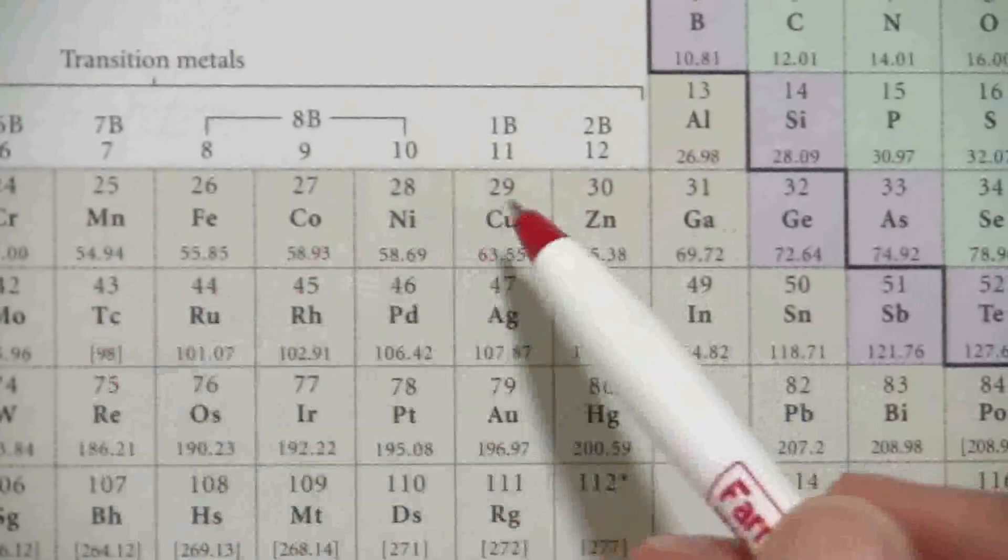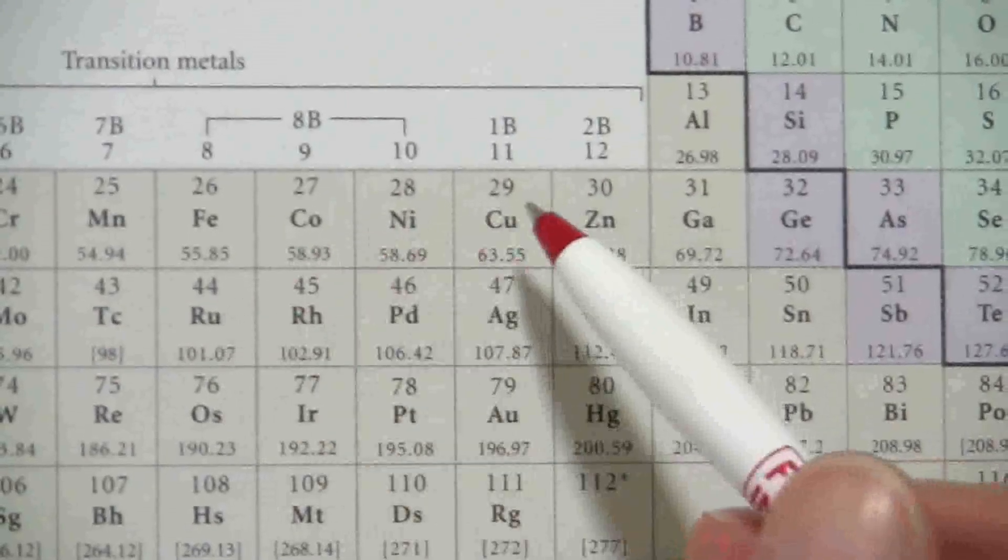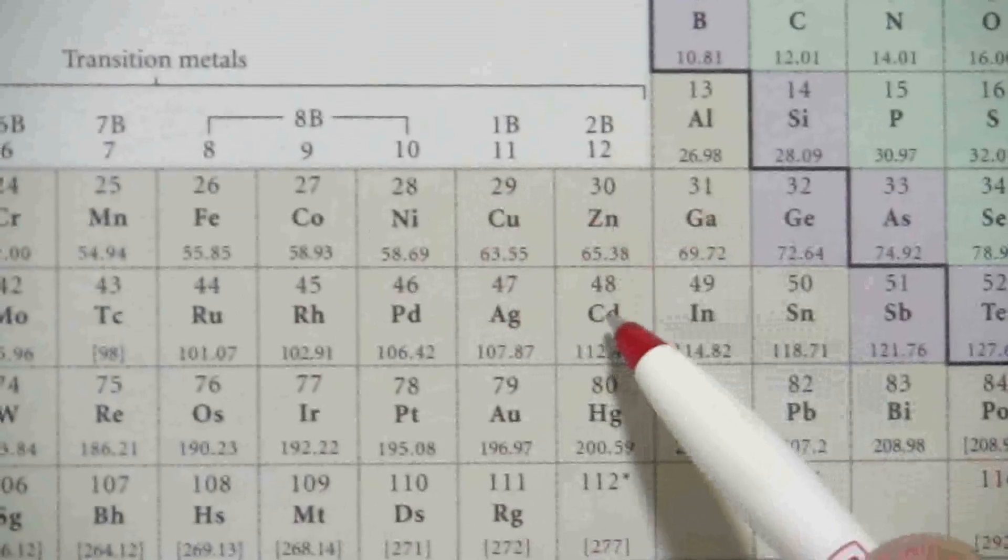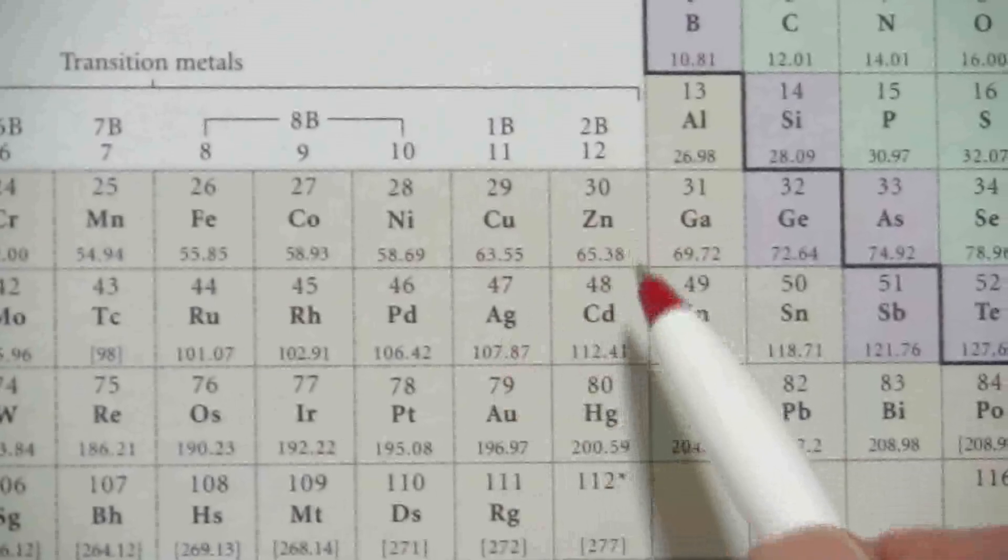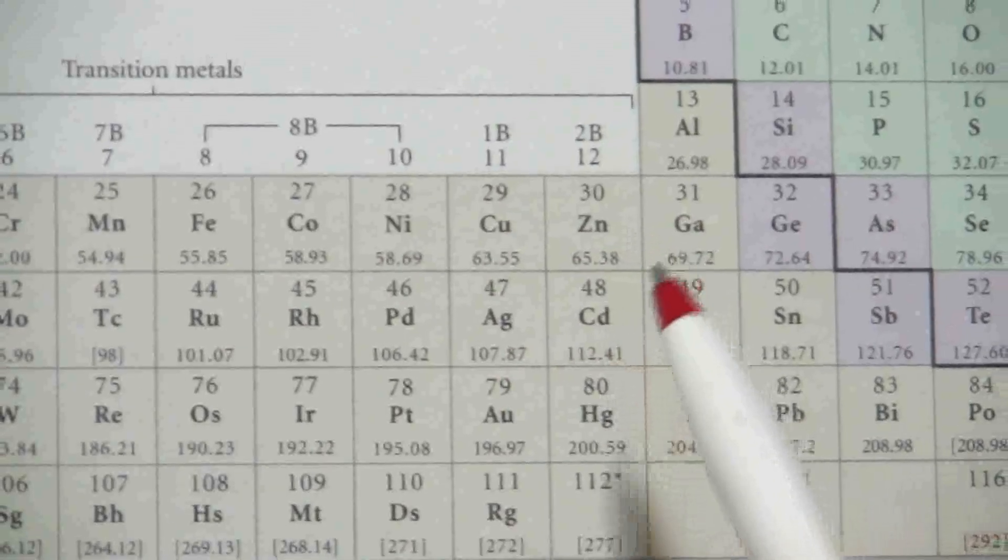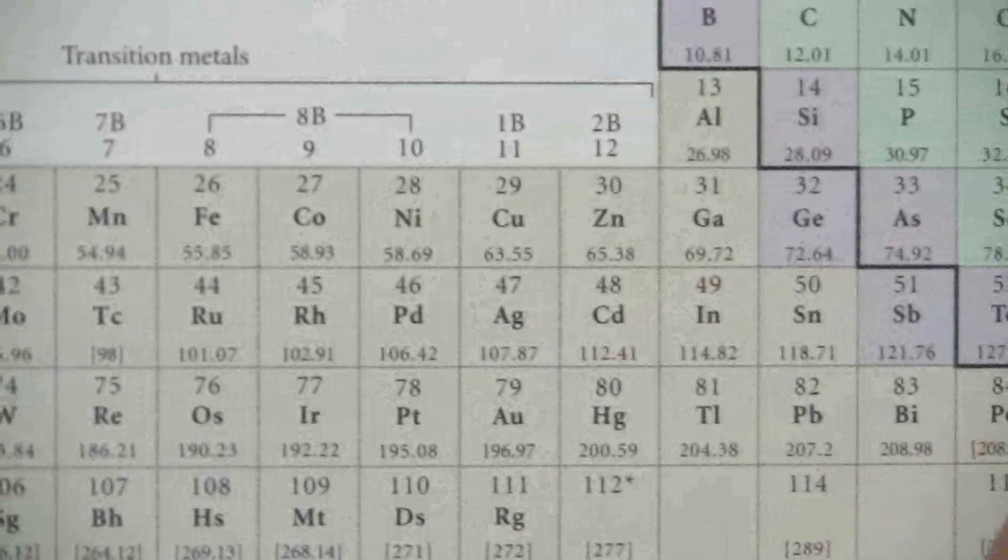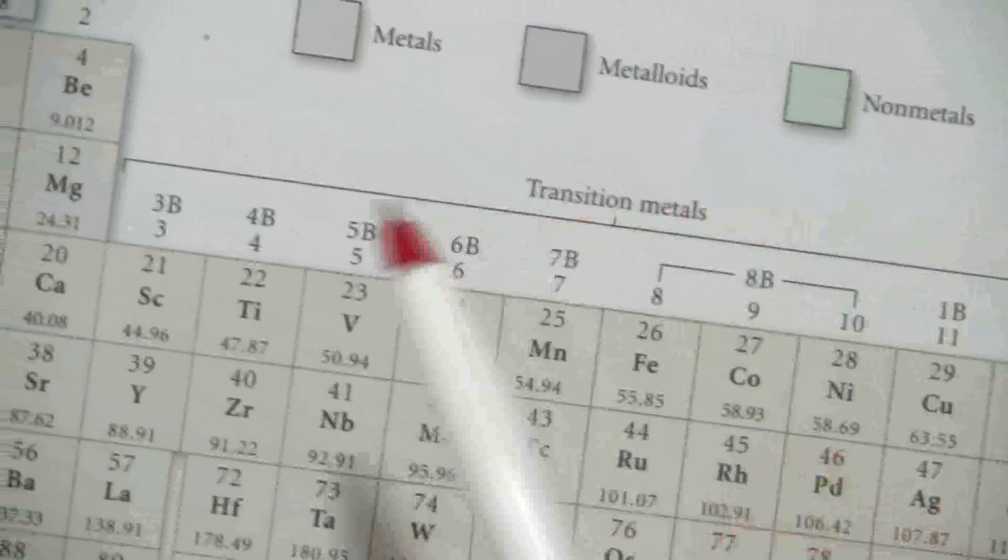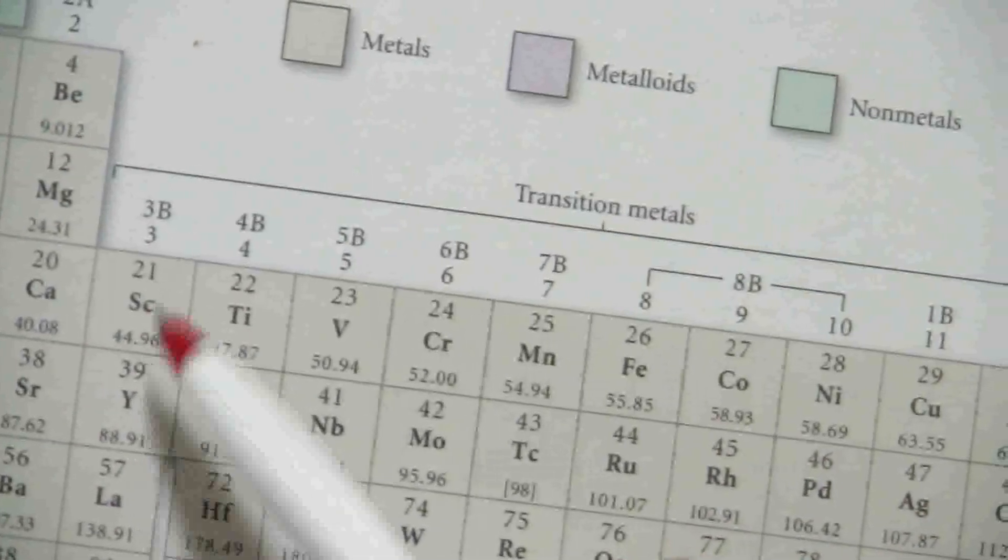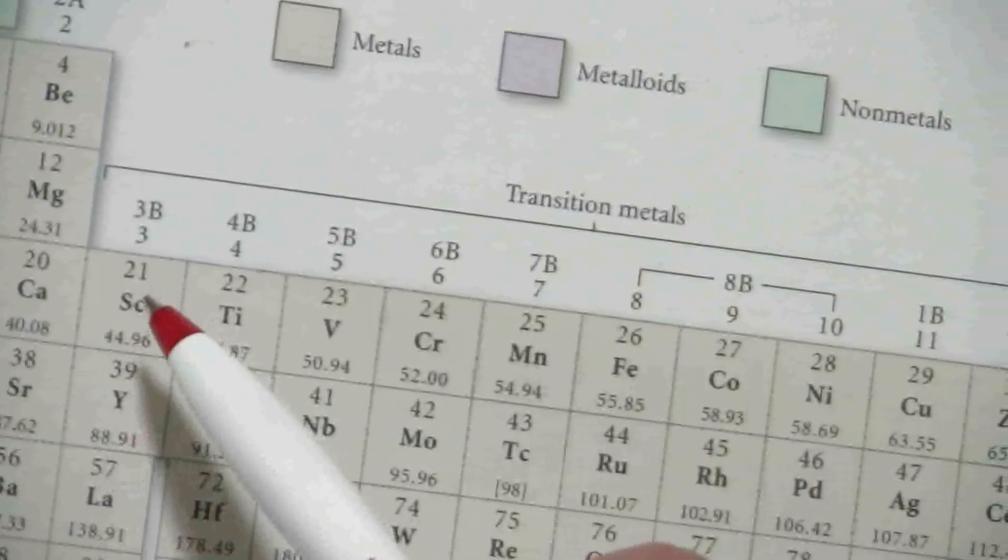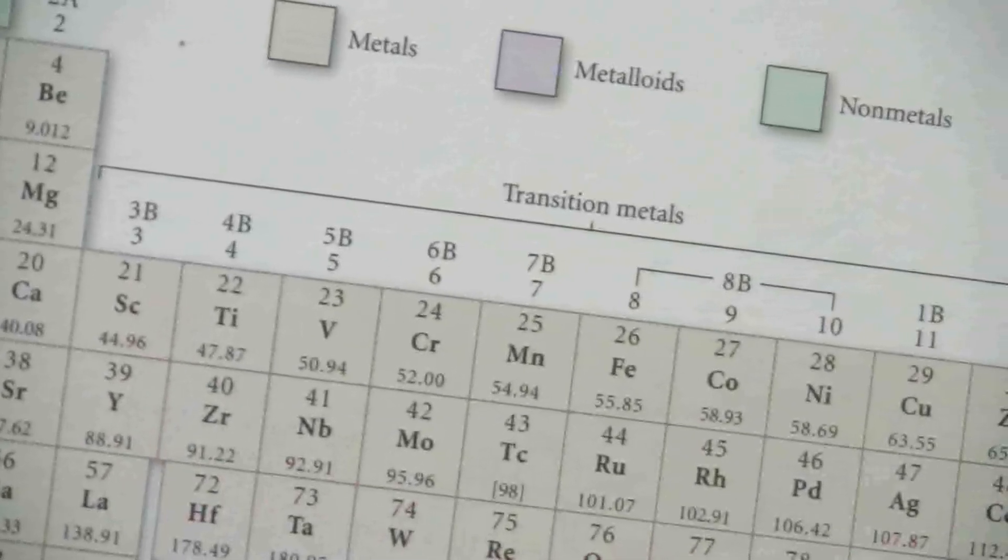So instead of being like the others where it can be different charges, zinc and cadmium are always plus two, silver is always plus one, and so we don't need to specify the charge in the name. The same thing applies to this first row over here, scandium and yttrium. Those are always going to be plus three, and so we don't need to specify that in the name.